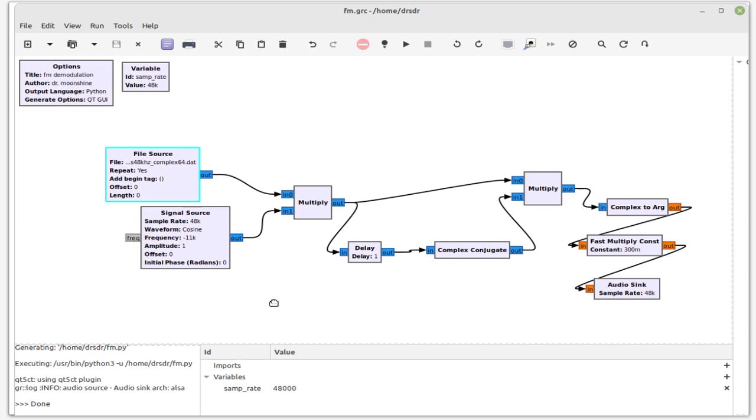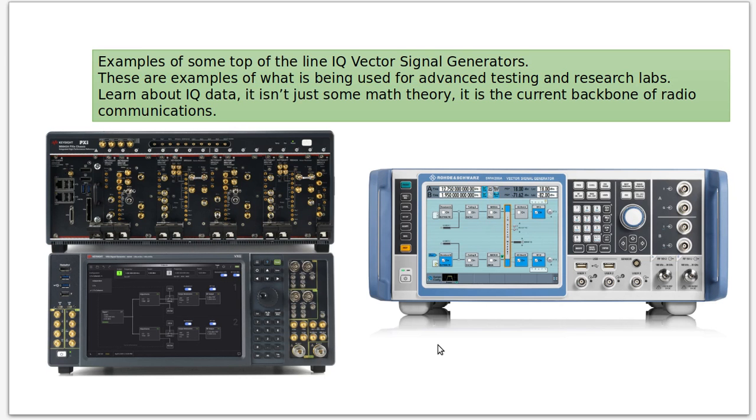So go ahead and download that file and try it yourself. And I'll leave you folks with a teaser here. These are two examples of top of the line vector signal generators. You won't find these at a ham radio store because they're a little pricey.